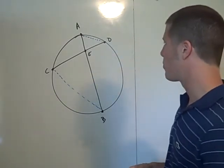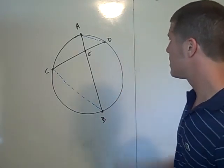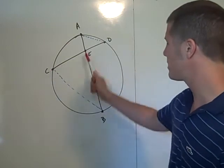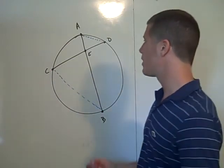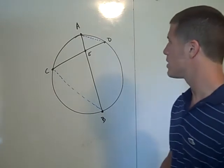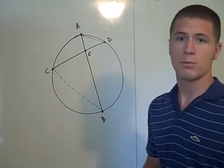Okay, so now I want to prove, I want to show that triangle AED is similar to triangle CEB. If we can do that, then the goal is pretty easily achieved by using a proportion.